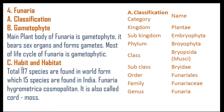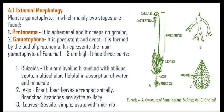Regarding habit and habitat, a total of 117 species are found worldwide, of which 15 species are found in India. Funaria hygrometrica is a cosmopolitan species, also called cord mosses, and is specially found on walls. Looking at external morphology, Funaria hygrometrica is a gametophyte which mainly has two states: protonema and gametophore.